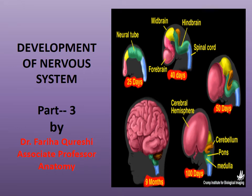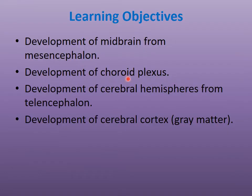Assalamu alaikum, hope all of you are fine. This is our third lecture on the development of the nervous system. We will discuss the development of the midbrain from the mesencephalon, the development of the choroid plexus, how the cerebral hemispheres develop from the telencephalon, and the development of the cerebral cortex, that is the gray matter.